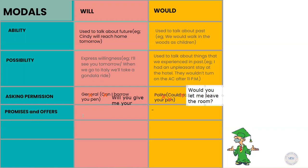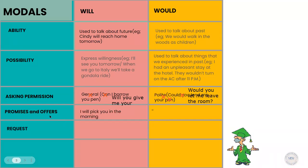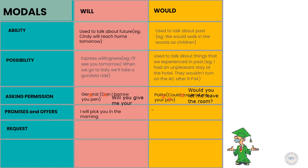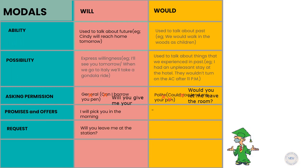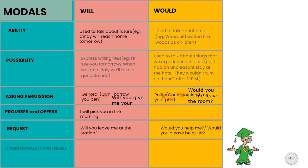Will is often used to make promises and offers. For example: I'll pick you up in the morning — this is a guarantee you're giving. The other person will expect you. So will is used to make promises and offers. Would makes a more polite request — for example: Would you help me? or Would you please be quiet? Here we are using would to make a polite request.